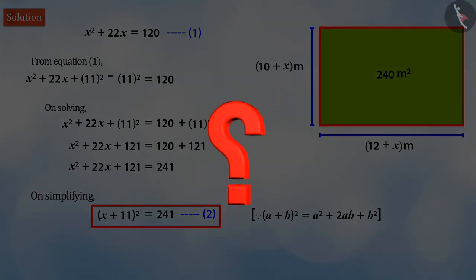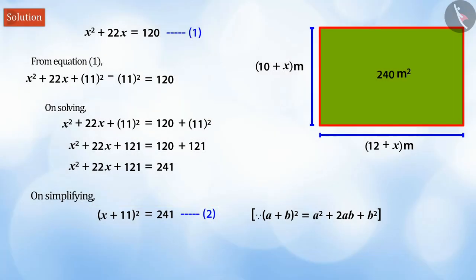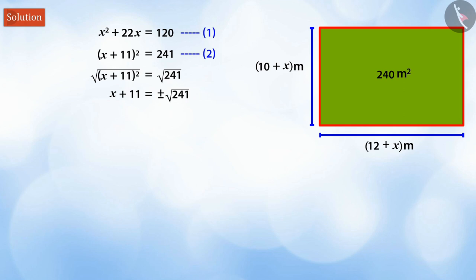Can you find the solution of this equation, that is the value of x? Well done! In order to solve this, the square root sign will be applied to both sides of equation 2. We will get the value of x plus 11 as plus or minus root 241. On solving equation 1 and 2, we will have the same roots.